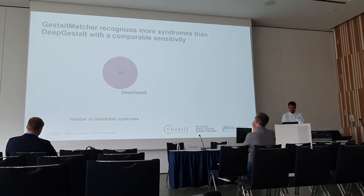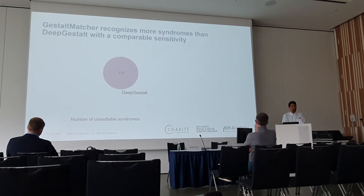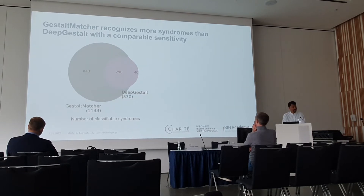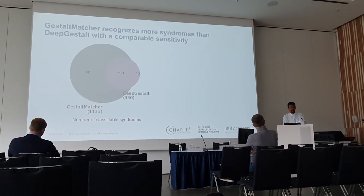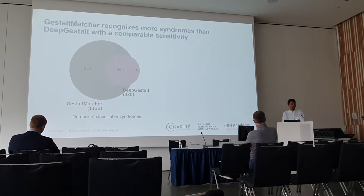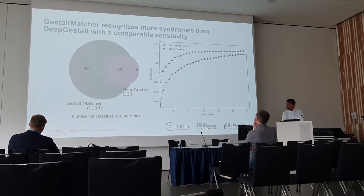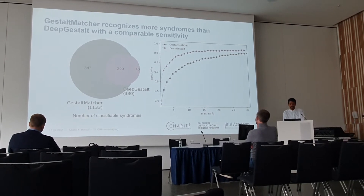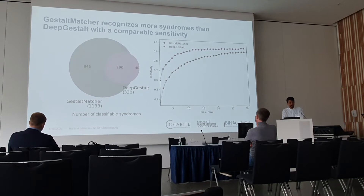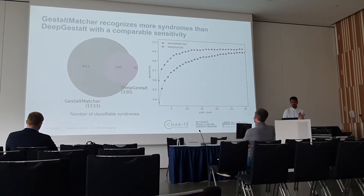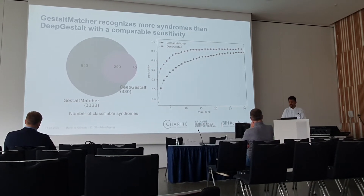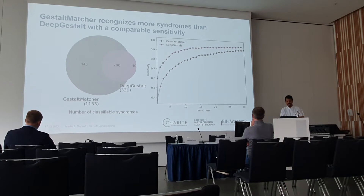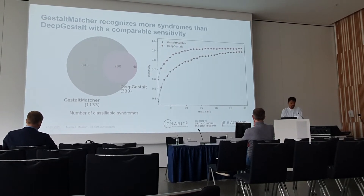Our team immediately started testing this, and we found that while Deep Gestalt can classify 330 syndromes, Gestalt-Matcher keeps its promise and classifies more different kinds of syndromes. We also looked at the sensitivity of Gestalt-Matcher and found that it is comparable to that of Deep Gestalt. This surprised me, as Gestalt-Matcher is prioritizing syndromes from a larger pool. It should be harder to put the correct diagnosis at the top, but the top-30 sensitivity is nearly the same as in Deep Gestalt.